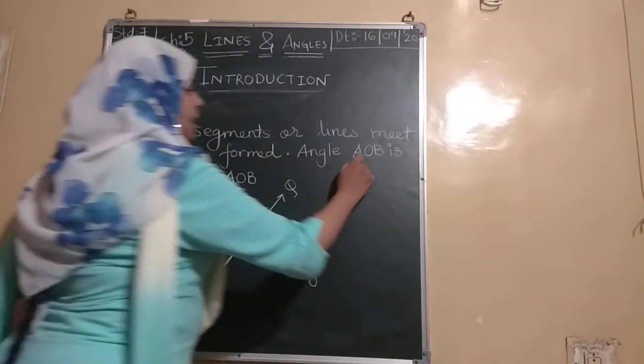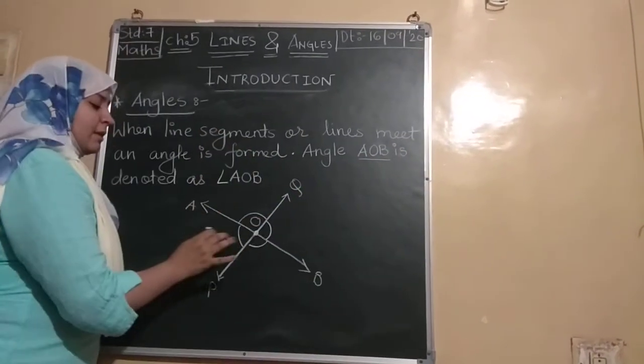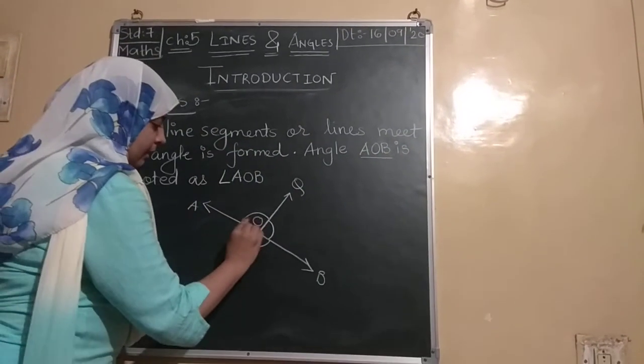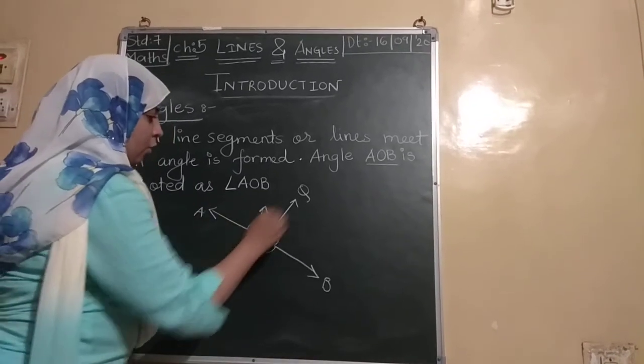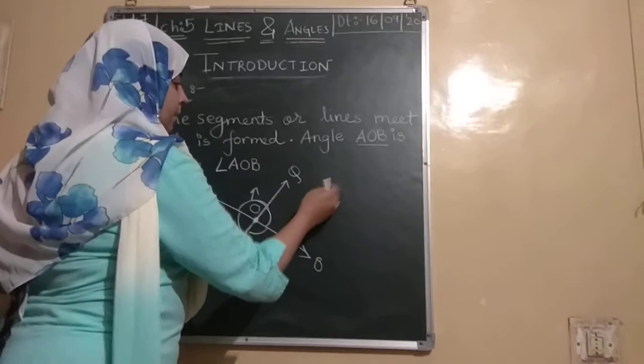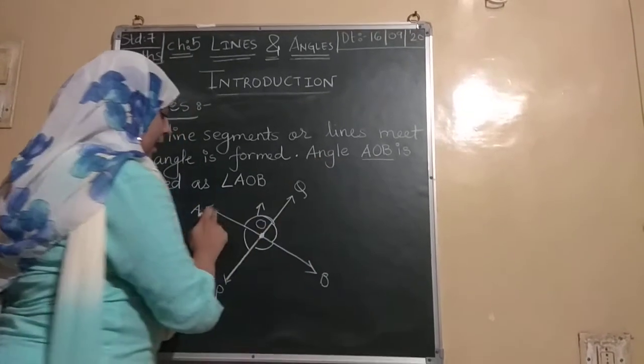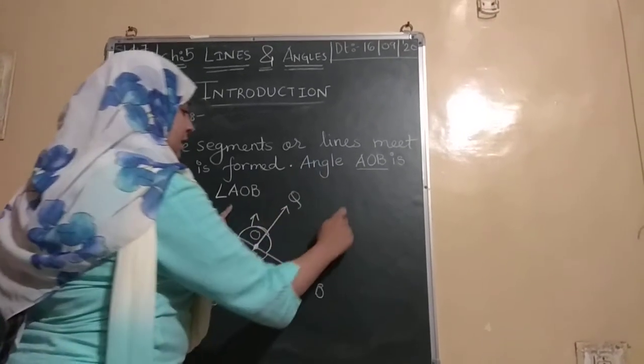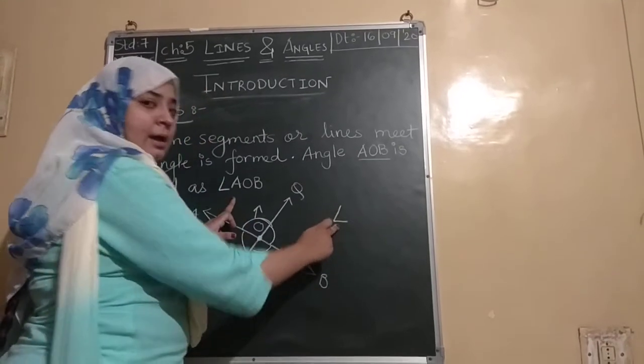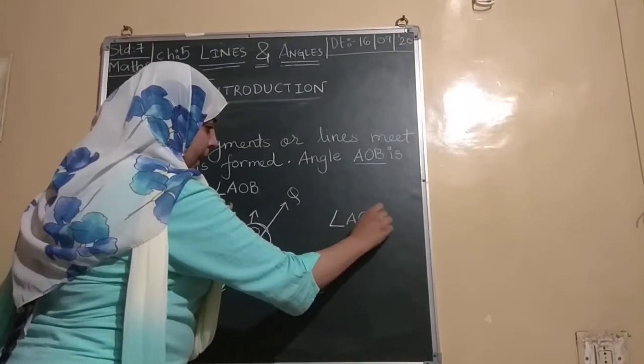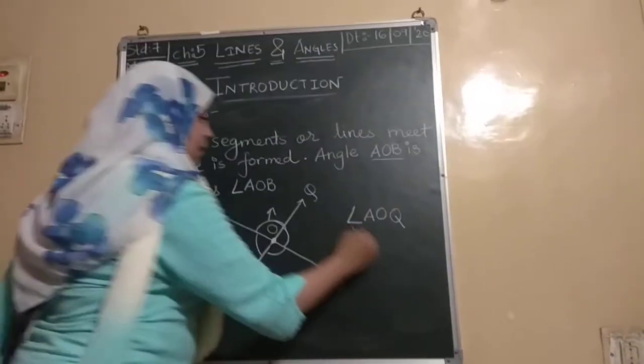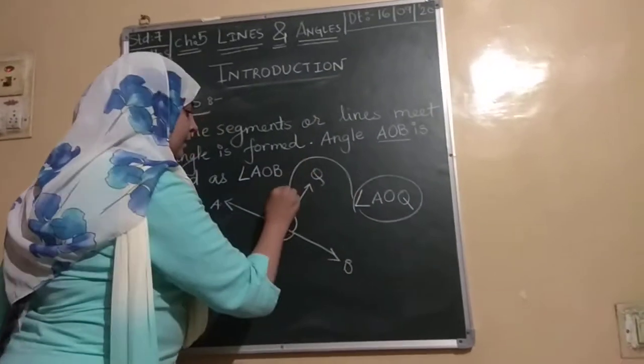So, here the name given is AOB, but we can take any name. If we want to talk about this angle, then this angle's name will be AOQ. So we will say, Angle AOQ. And how to denote it? The angle sign is this. Angle AO and Q. So, this is the angle's name.